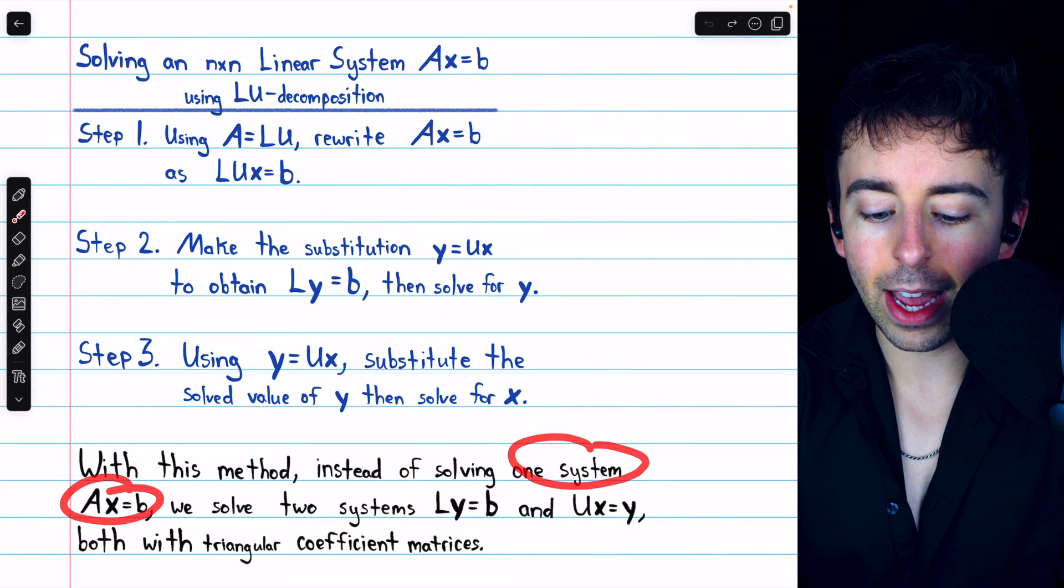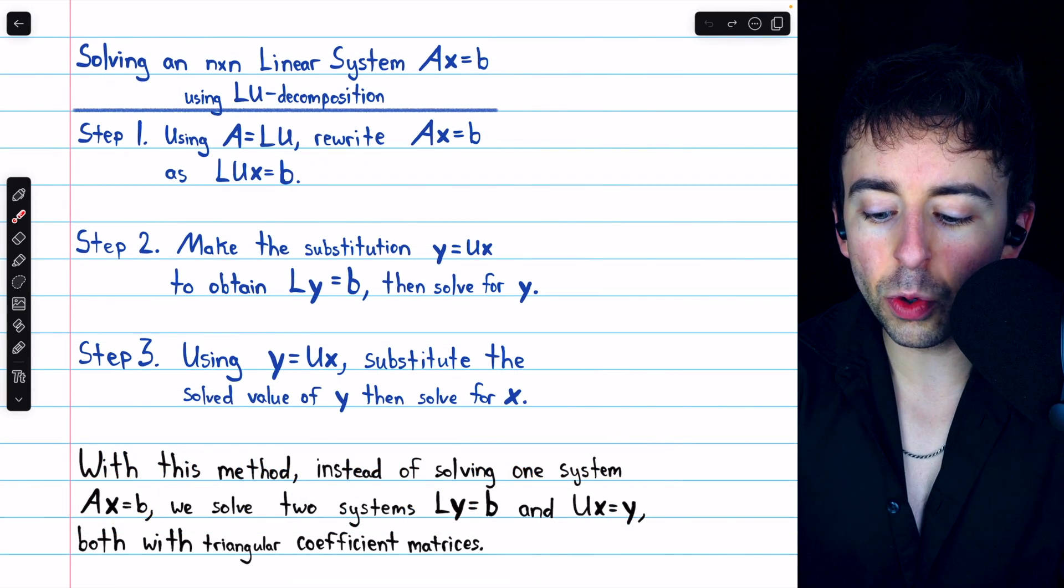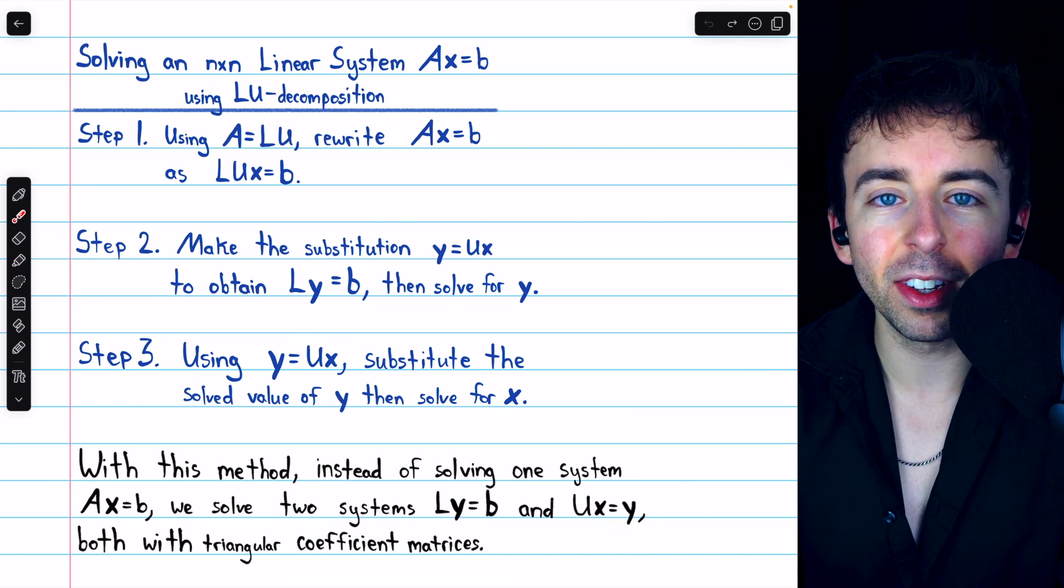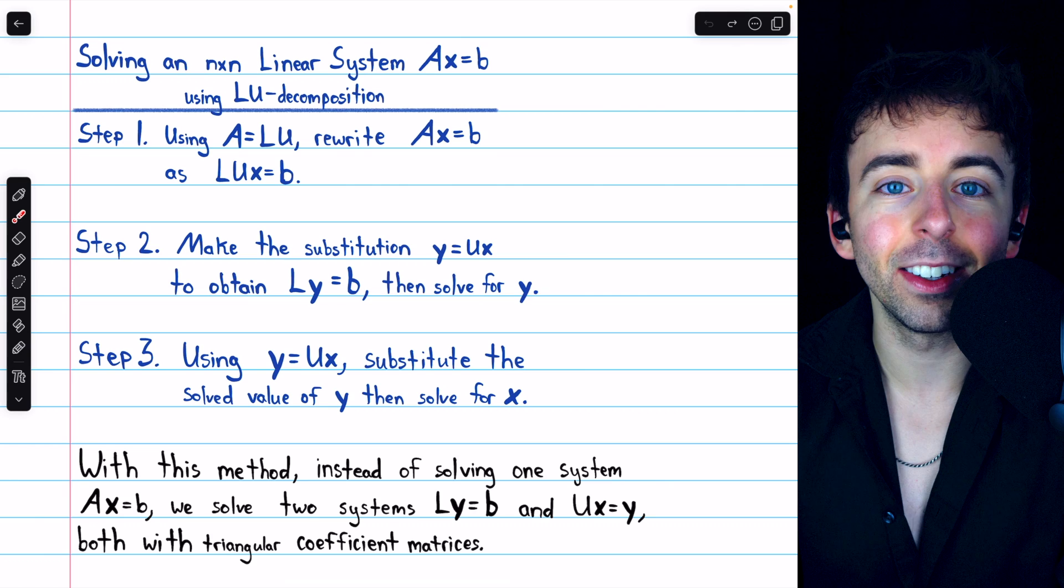In total, instead of solving the one system AX equals B, we solve two systems which each have triangular coefficient matrices, and thus are quite easy to solve.